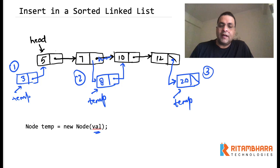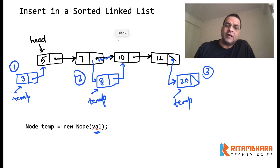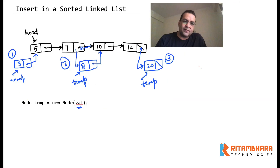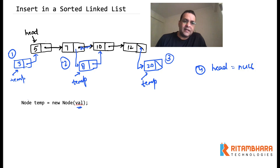Whenever we are writing code we should also test it against boundary conditions. One of the boundary conditions here is what if the list is empty. So if the list is empty it means that head is null. So that becomes the fourth scenario that we will check our code against — the fourth scenario is when head is null.